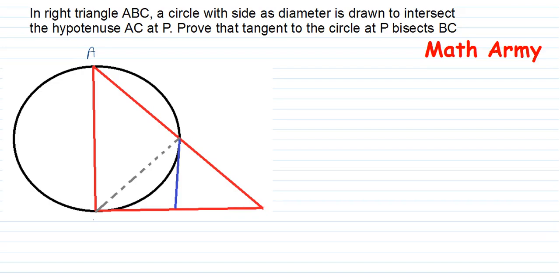First of all, I have drawn triangle ABC in red color. ABC is a right angle triangle. AB is one side of the triangle and is also the diameter of the circle, so I have drawn the circle in black color. Somewhere at point P, AC is intersecting — between A and C — AC is the hypotenuse and point P is on it.